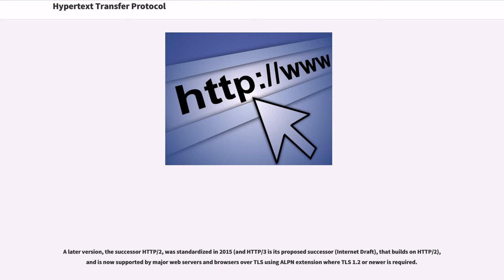A later version, the successor HTTP-2, was standardized in 2015, and HTTP-3 is its proposed successor, currently an Internet Draft, that builds on HTTP-2 and is now supported by major web servers and browsers over TLS using the ALPN extension where TLS 1.2 or newer is required.